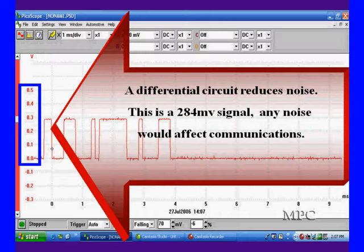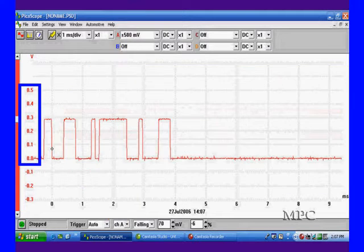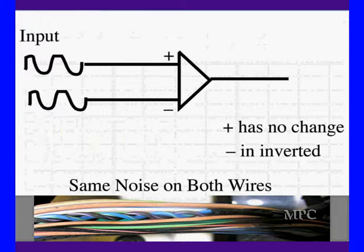The differential circuit reduces the noise. It cancels it out. We're going to talk about how it does this. This is a 284 millivolt signal. Any noise would wipe it out. That's a point in case.